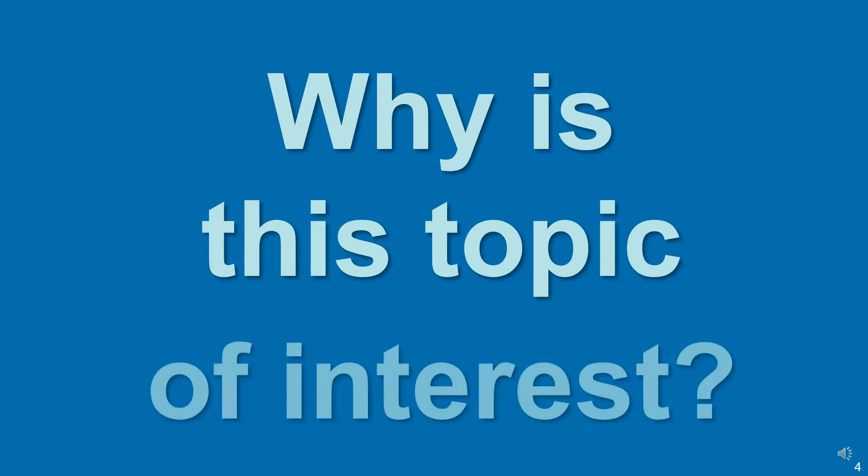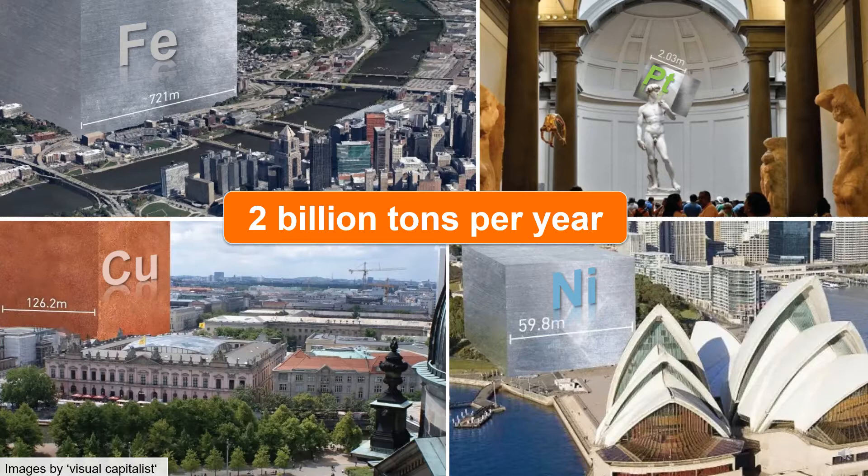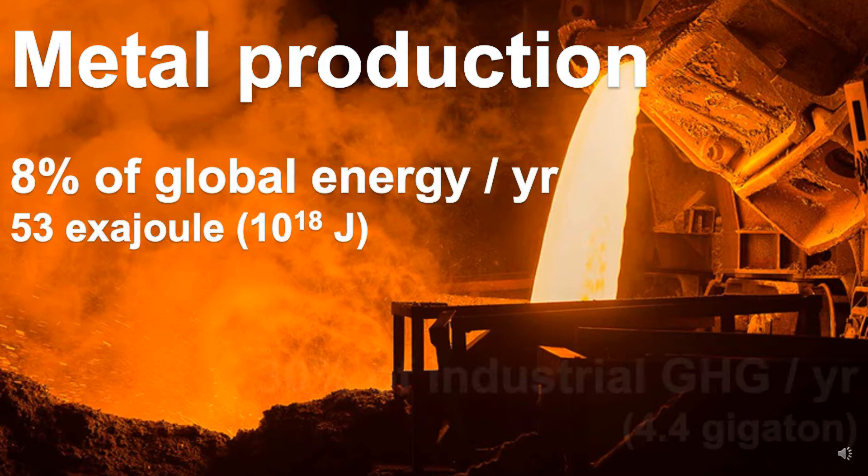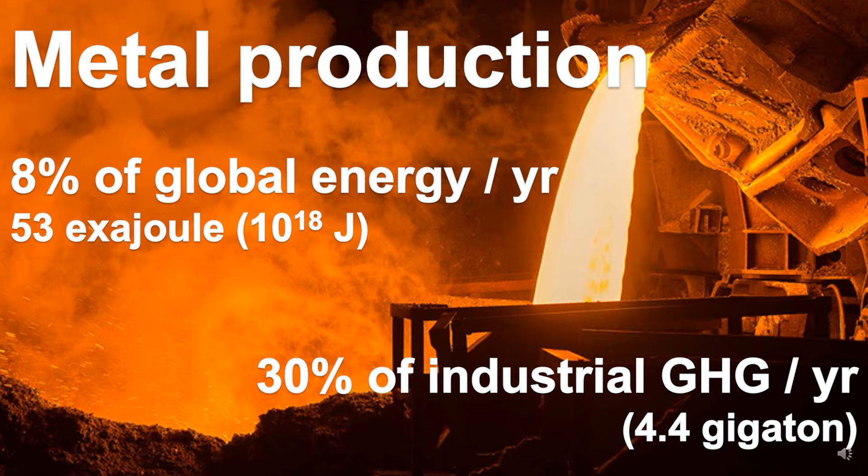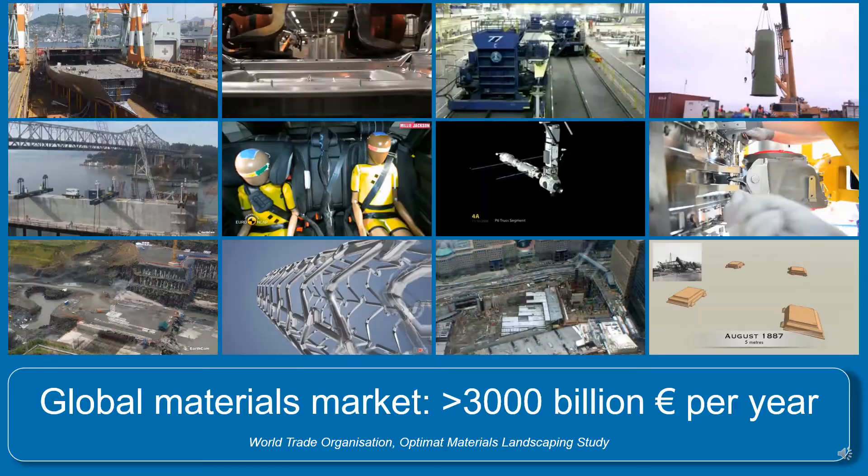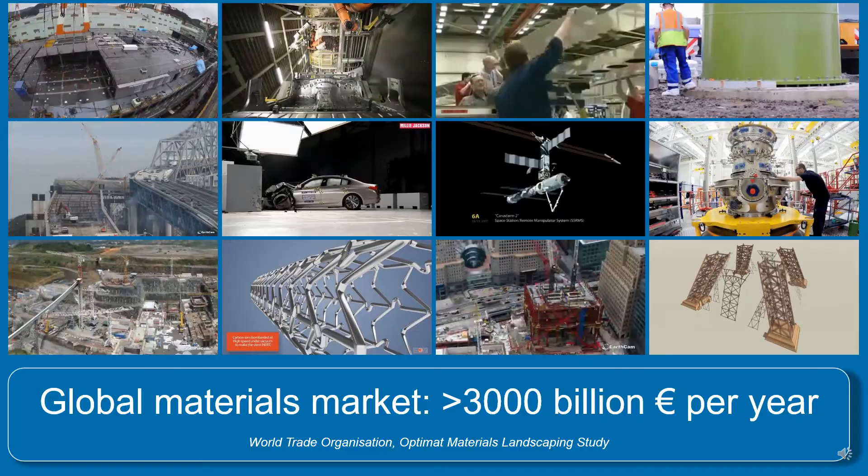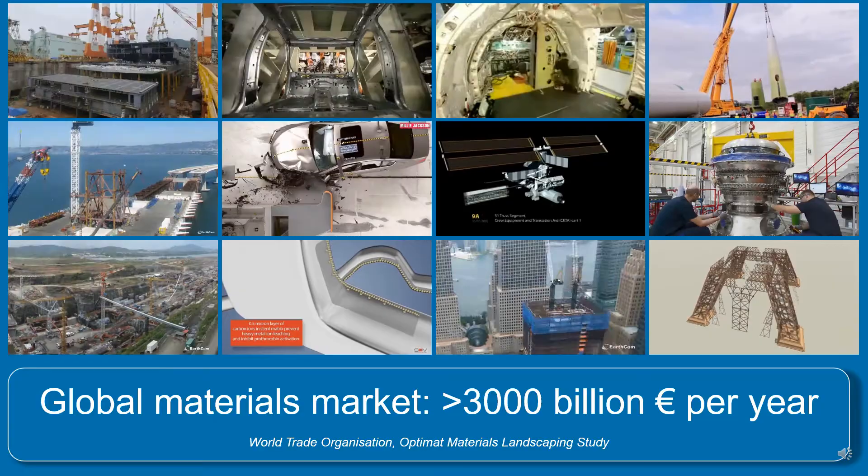Now generally, why is this topic of interest? We all know that we roughly produce 2 billion tons of material, particularly metallic materials, per year. This is associated with a huge environmental burden. Metallurgical production requires about 8% of the global energy and produces about 30% of all the industrial greenhouse emissions. On the positive side, there's a gigantic market. We have a materials market exceeding 3,000 billion euros per year, of which the metal market has the biggest fraction.